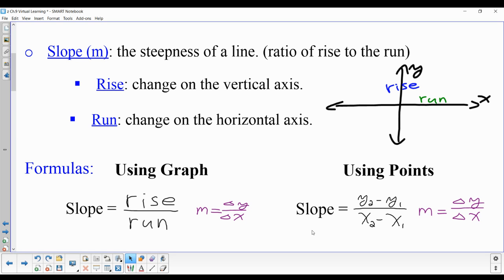In this video, we're going to go over finding slope off of a graph. Slope is the steepness of a line, and we'll look at it as a ratio of the rise to the run.